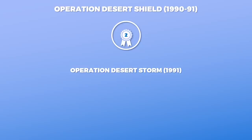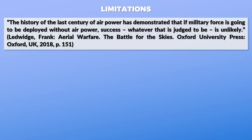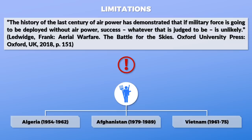Since we've spoken mostly about the four roles and capabilities of air power, we must also address its limitations. Generally, air power has had a huge influence — the history of air power has demonstrated that if a military force is going to deploy without air power, success is unlikely. Yet there is an important exception: namely fighting insurgencies, which not only the French had to learn in Algeria, but also both superpowers — the Soviet Union in Afghanistan and the US in Vietnam — since insurgencies are rather resilient to the application of direct military force.